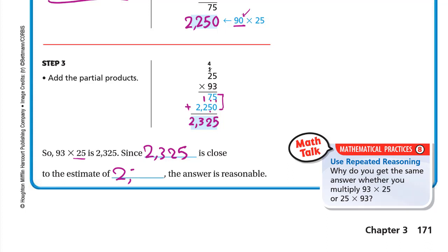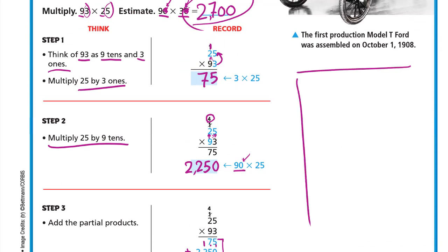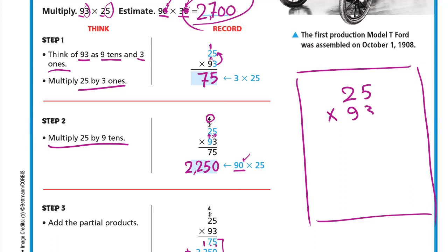Now let's do it in one pass, because you don't have to write all the steps every time. The question is 25 times 93. First we multiply by 3 — it's as if we don't see the 9. So 3 times 5 is 15, write 5 down and carry 1 up. Then 3 times 2 is 6, plus 1 is 7.